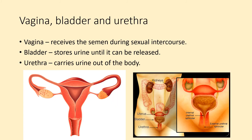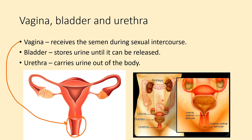Vagina, bladder and urethra. The vagina receives semen during sexual intercourse — it's the tube where the penis gets inserted. The bladder stores urine until it can be released, and the urethra carries urine out of the body. These aren't really part of the reproductive system in females, but they're in the same region, so we talk about them at this point.